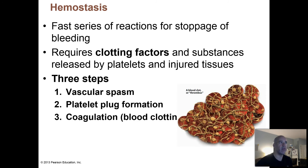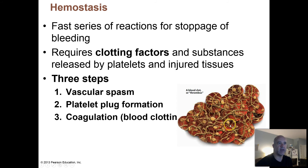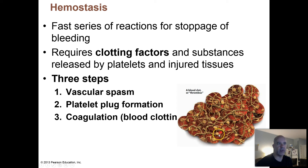This process of hemostasis has three major steps that occur to form a blood clot and stop the loss of blood. A blood clot consists of fibrin proteins — that yellow fibery material — which make a netting or mesh that traps blood cells, especially red blood cells since they're the most abundant. It actually contracts and squeezes out the fluid from those clumped-up cells. So a clot is mostly red blood cells trapped in a fibrin mesh.